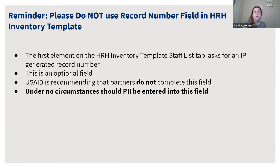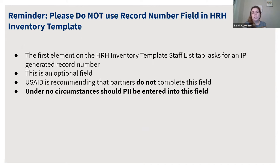As a reminder within the template, there are a few key things to highlight. First, please do not use the record number field in the HRH inventory template. The template is an Excel-based tool and the very first column is record number. USAID headquarters recommends not using this field — it is optional, and under no circumstances should PII be entered into this field.